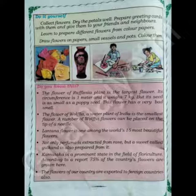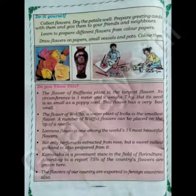The Lantana flower is one among the world's 15 most beautiful flowers. Not only is perfume extracted from rose, but a sweet called gulkand is also prepared from it. Karnataka is a prominent state in the field of floriculture. 75% of the country's flowers are grown here. The flowers of our country are exported to foreign countries also.